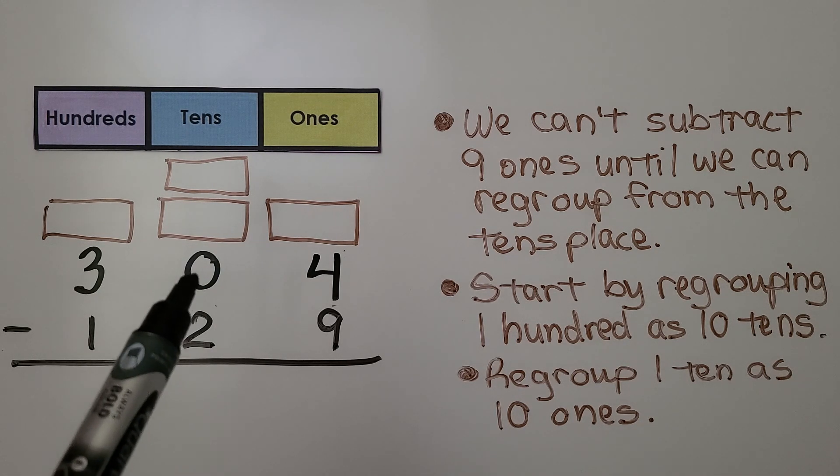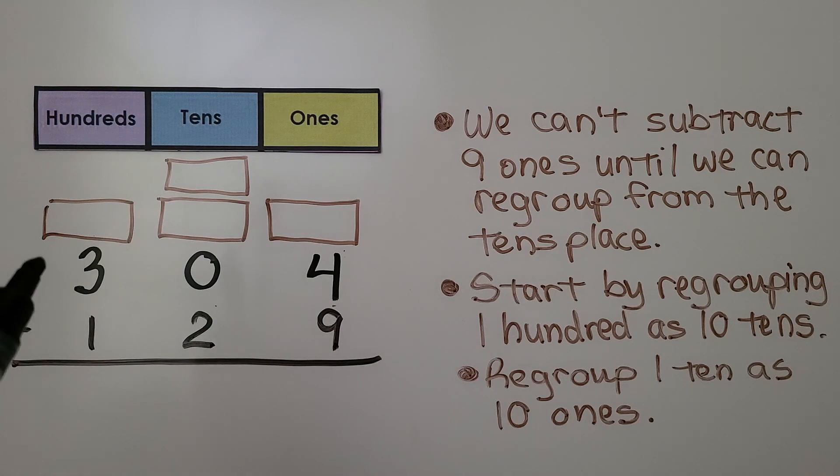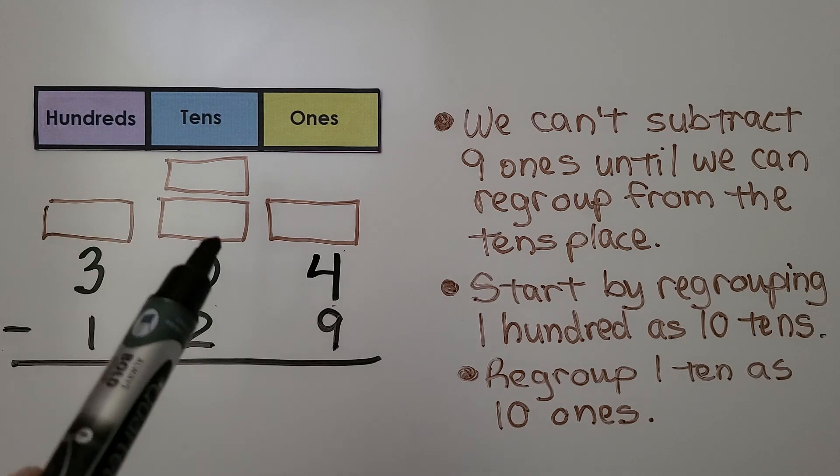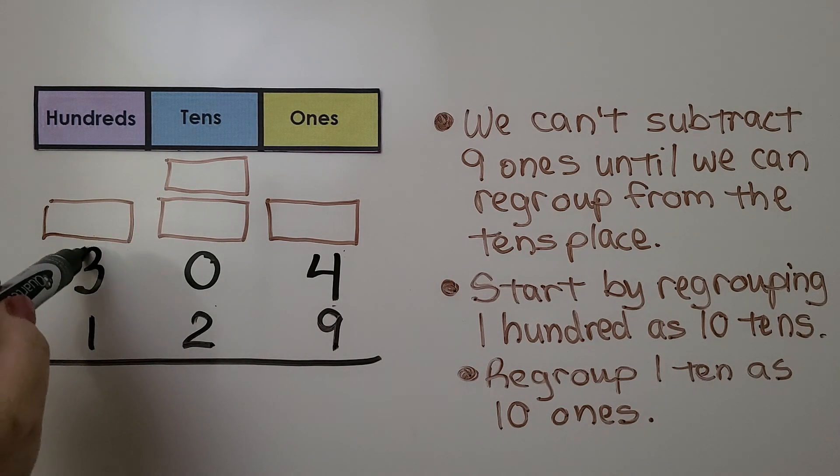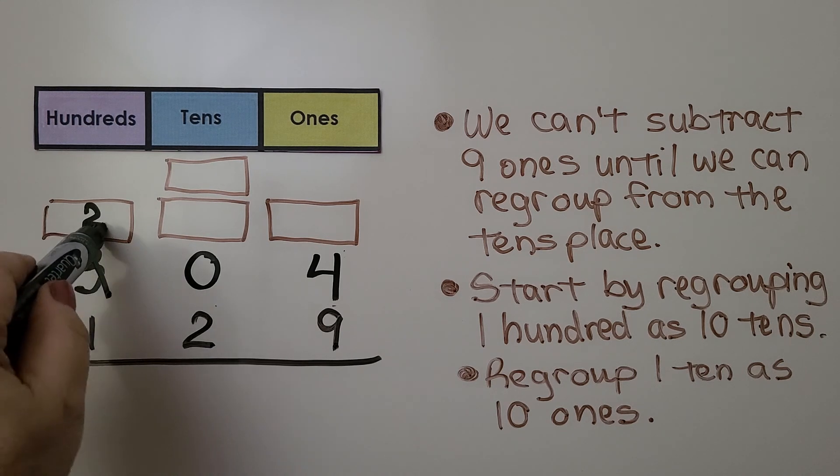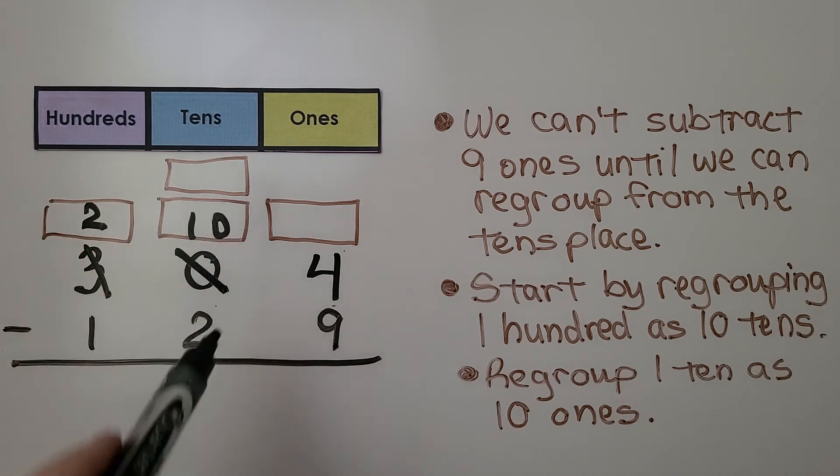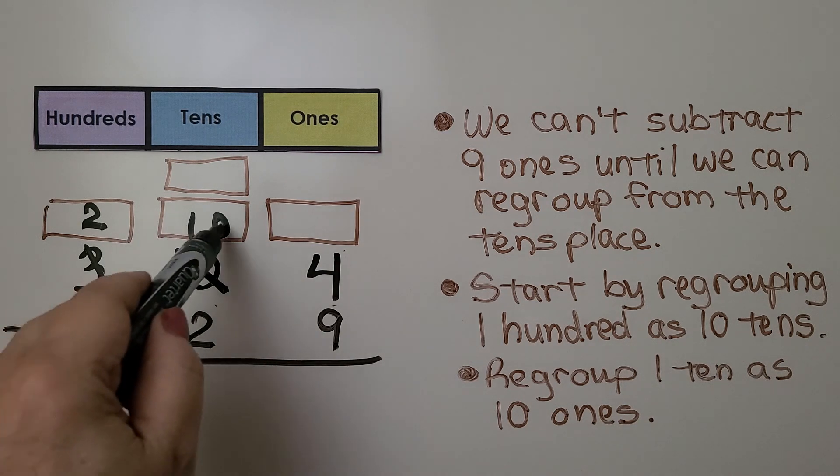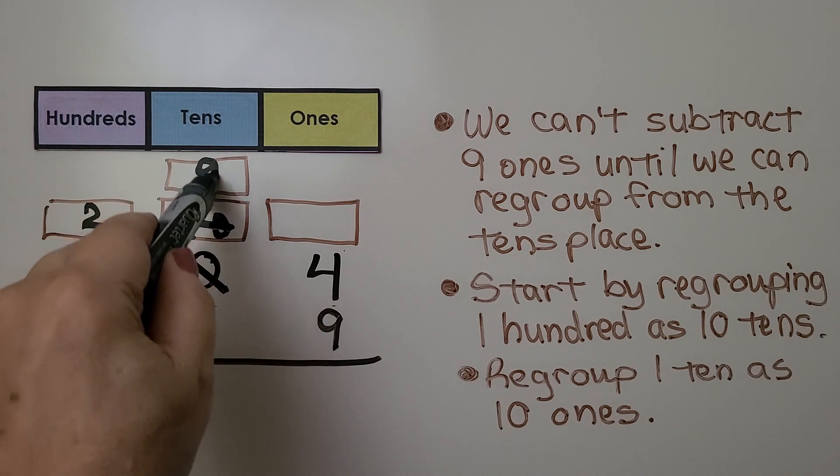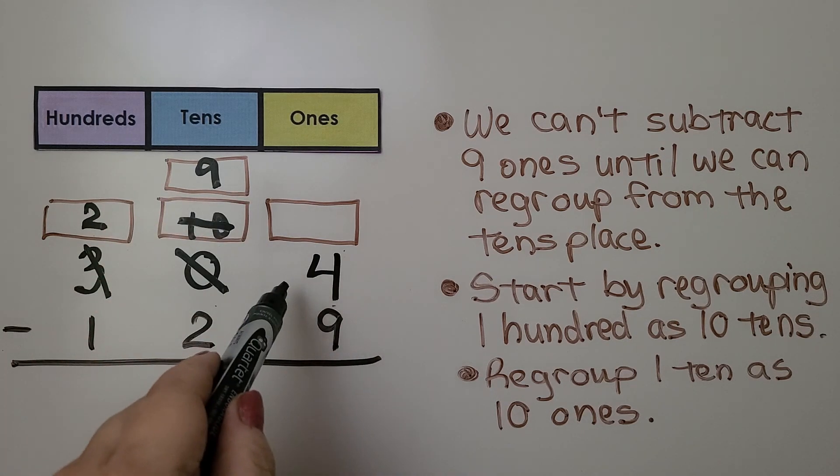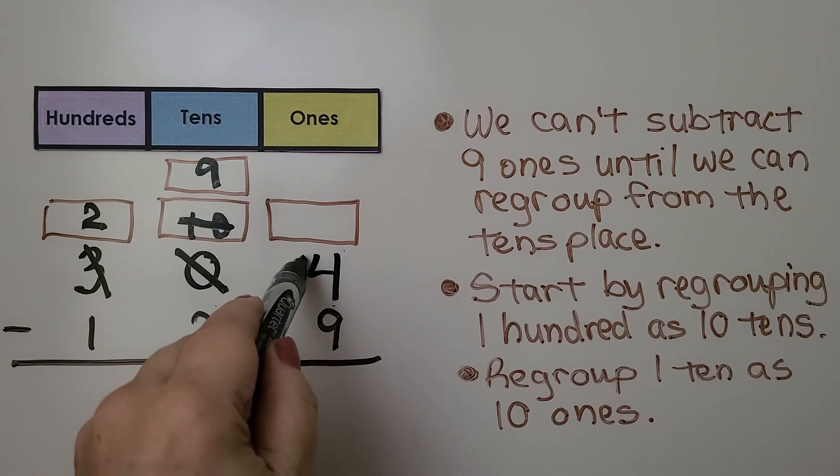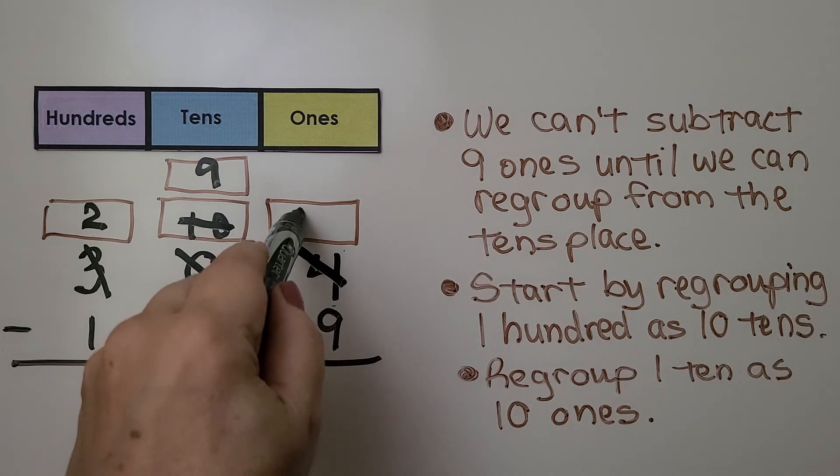There's zero tens we can't regroup, so we start by regrouping 100 as ten tens. Instead of three hundreds, we have two hundreds. Instead of zero tens, we have ten tens. Now we can regroup for the ones. We change the ten tens to nine tens, and we give that ten to the ones place as ten ones. Now instead of four ones, we have fourteen ones.